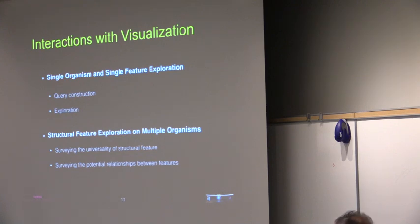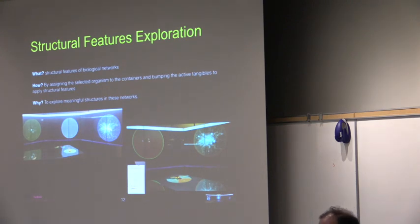In the next slide, I'll talk about more complex tasks and interactions. These include single organism and feature exploration as well as exploration and comparison across multiple organisms. Users may want to get a better understanding of the topological structure of the selected networks. This is done by assigning the selected organisms to the different containers using the actables and performing different tangible interactions. For example, bumping an organism actable with a filter actable will apply a filter to that network.